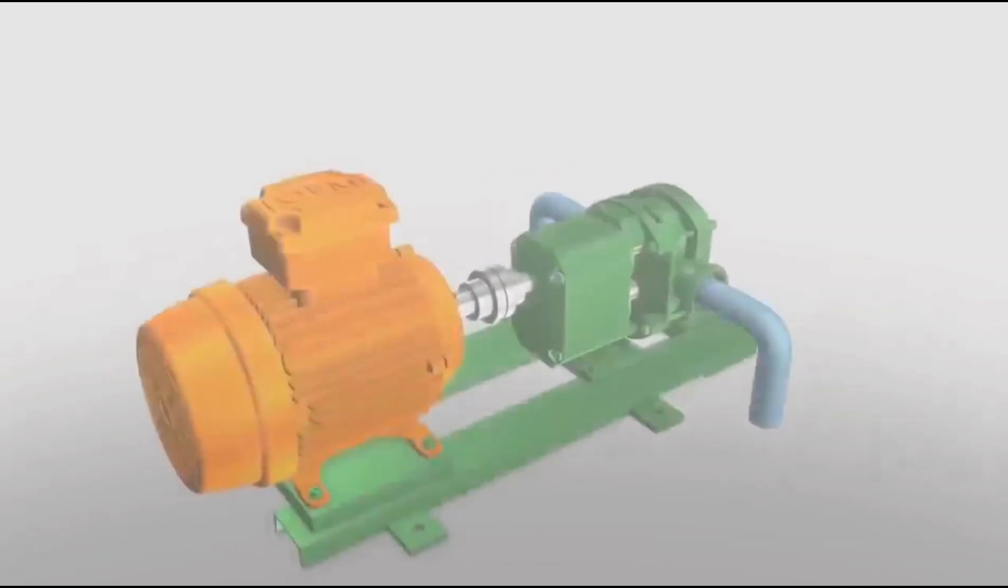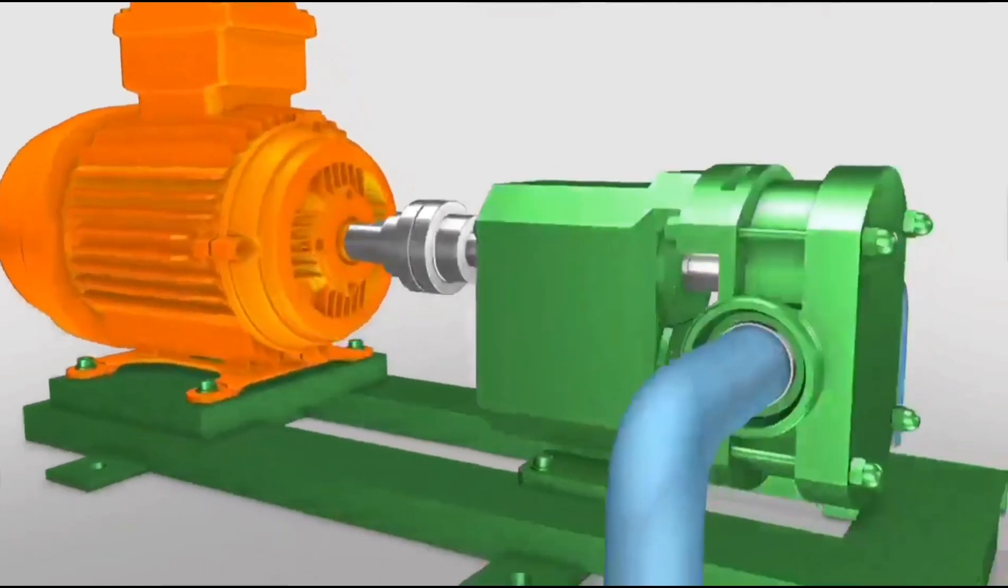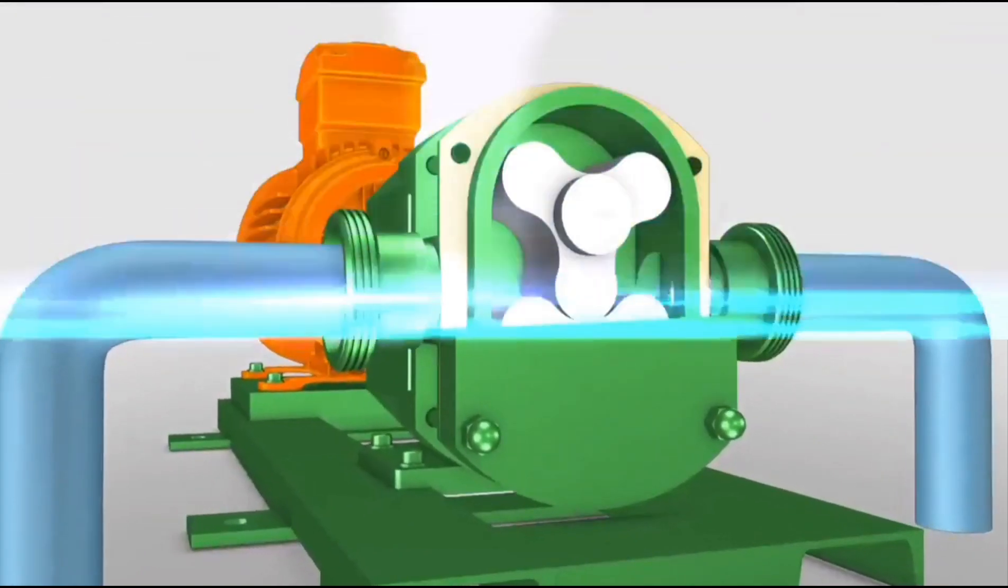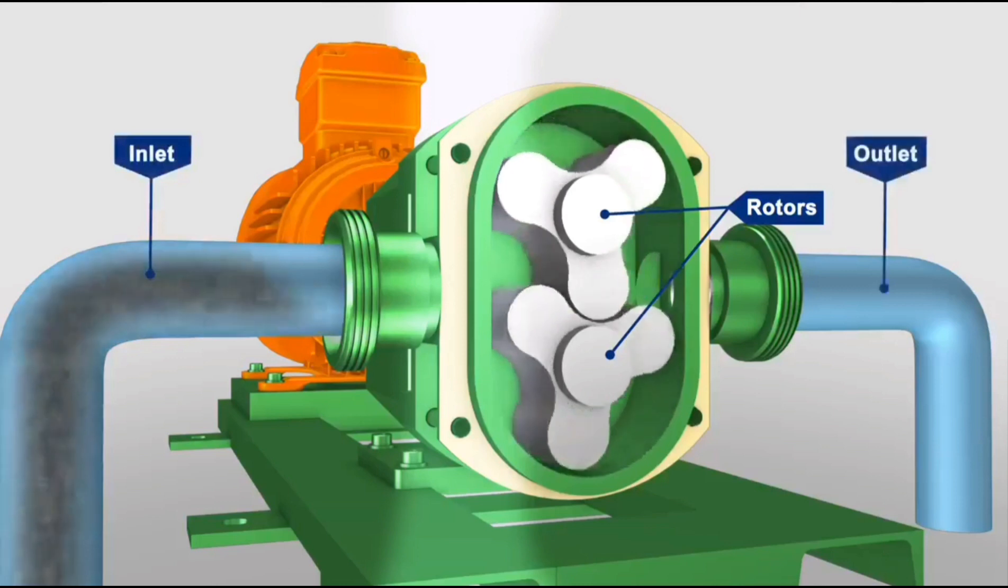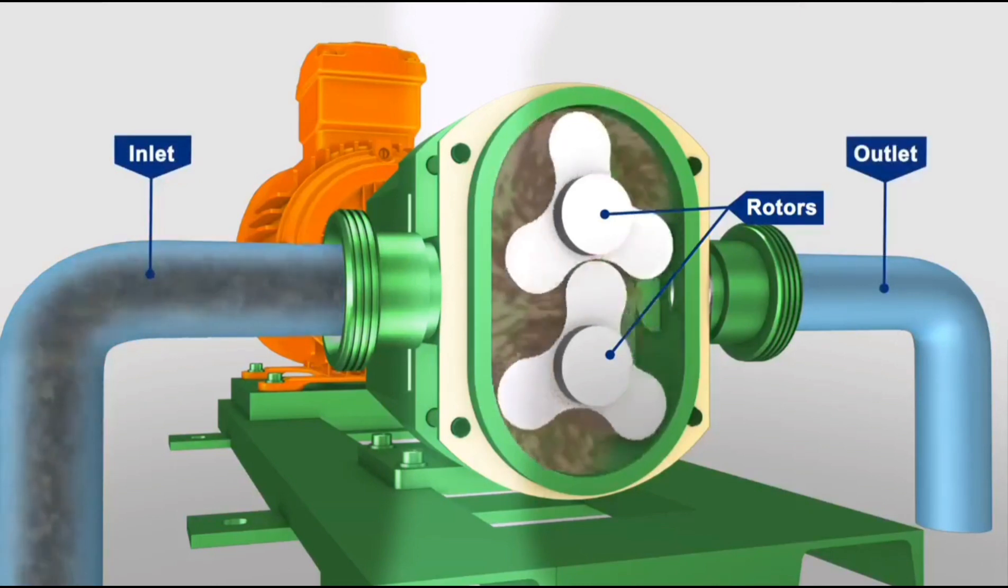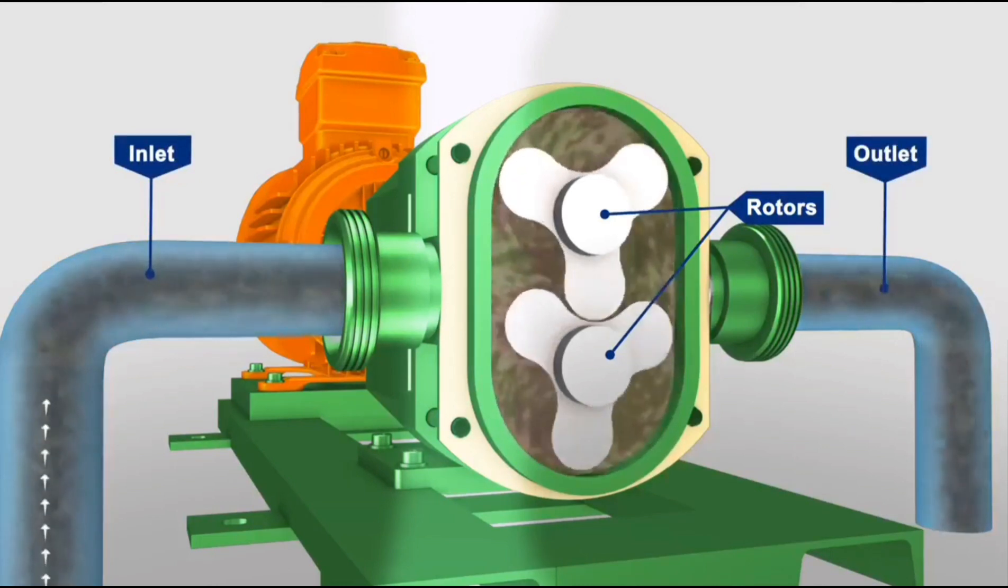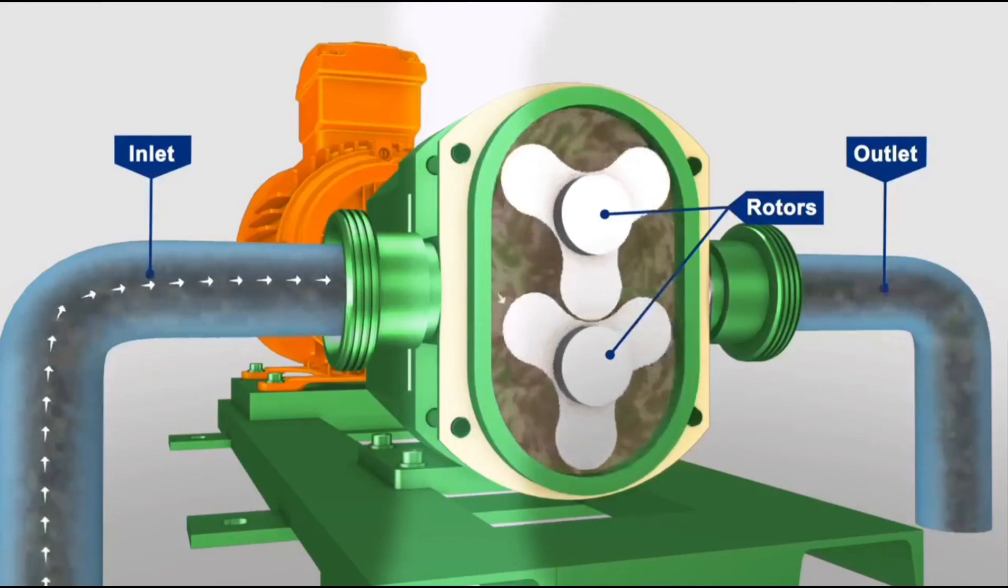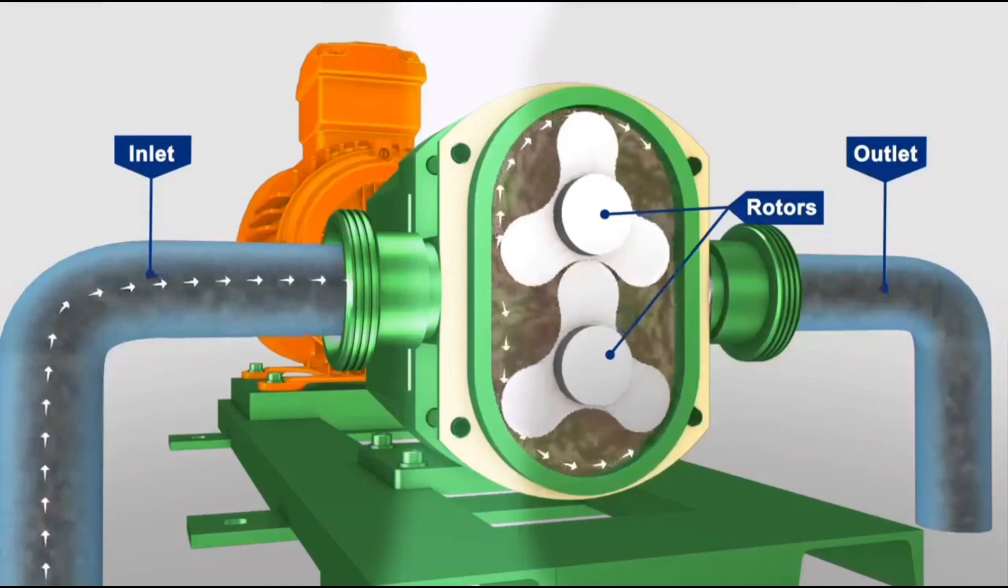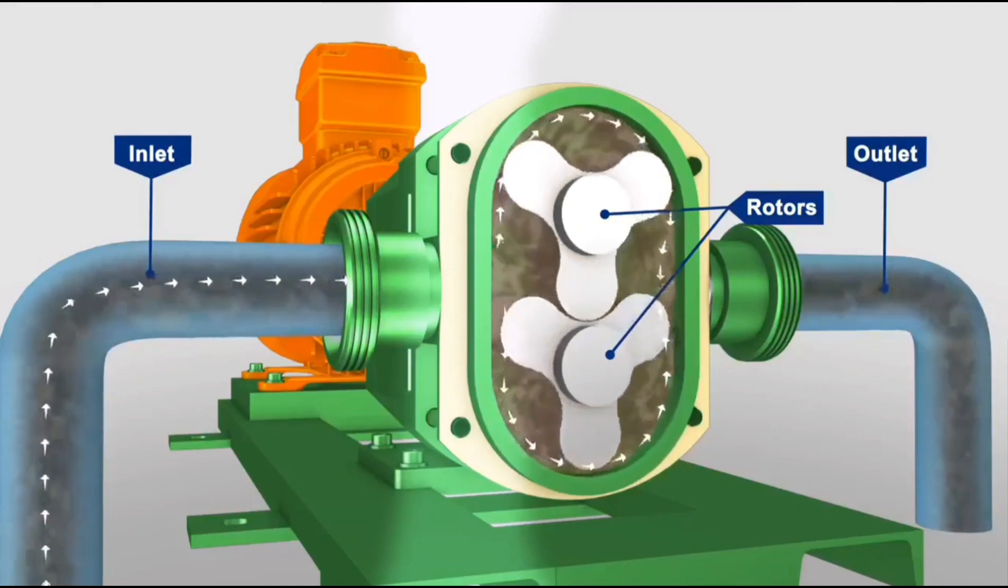The lobe pump receives its name from the rounded shape of the rotor radial surfaces that permits the rotors to be continuously in contact with each other as they rotate. Lobe pumps can be either single or multiple lobe pumps and carry fluid between their rotor lobes much in the same way as a gear pump does.